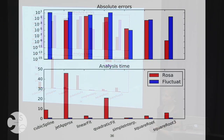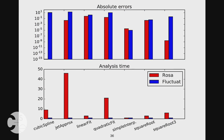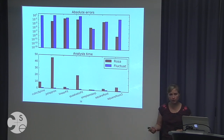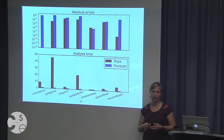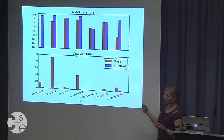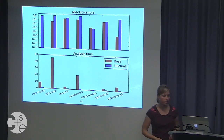On benchmarks with branches, we're significantly better than Fluctuat on error accuracy — shown on a log scale — and FP-Taylor doesn't have any procedure for capturing discontinuity errors. Analysis time is a little longer than Fluctuat's constant one second since we rely on Z3, but still mostly on the order of seconds — except the jet engine approximation benchmark, which has been troublesome from the beginning.